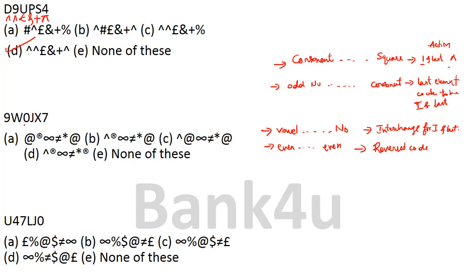Question 2: 9WOJX7. The first one is 9 — an odd number. The last one is 7 — also an odd number, not a consonant. So Condition 2 requires the last letter to be a consonant, but 7 is not a consonant. No condition is satisfied here, so no special condition will be applied — we put the same code as it is.